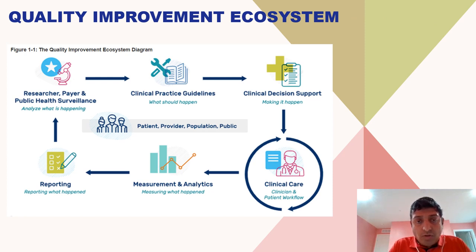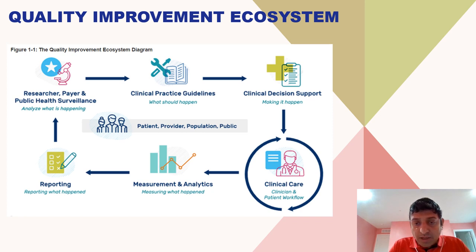If we talk about the overall quality improvement ecosystem, there are different stakeholders. There are researchers, peers, and public health surveillance folks who interact with clinical practice guidelines, which defines what should happen. Based on these guidelines, the interaction happens with the clinical decision support system, which makes it happen. The next set of communication happens with clinical care — the clinician and patient workflow are part of it. Based on that interaction, measures and analytics are performed, and quality measure reporting is performed, which is then reported to the researchers, peers, and the public health surveillance experts.